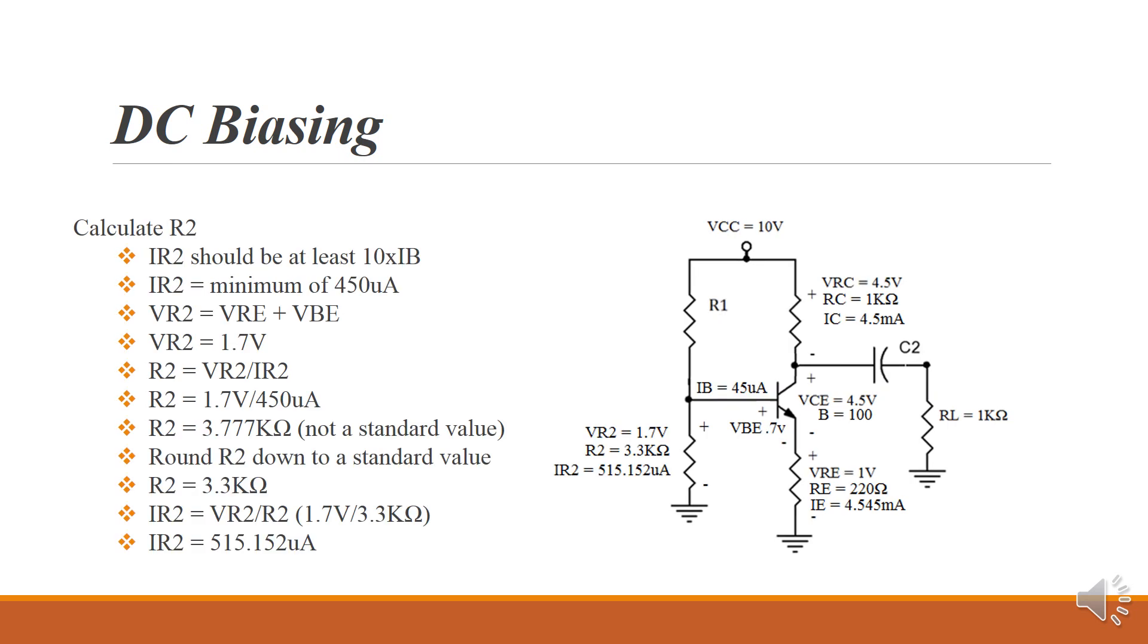Now let's take a look at R2. In order to calculate R2, we want to make sure that the current flowing through R2 is at least 10 times the current of IB. And what this is going to do is keep that voltage really stable. So if there's small changes in IB, it won't affect the voltage across VR2.